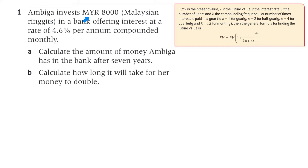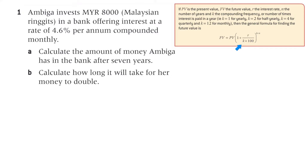Question 1. Ambiga invests Malaysian Ringgit 8,000 in a bank offering interest at a rate of 4.6% per annum compounded monthly. That's key. We're going to use the general formula with K, because we're not dealing with one year only — we're looking at monthly or weekly compounding.